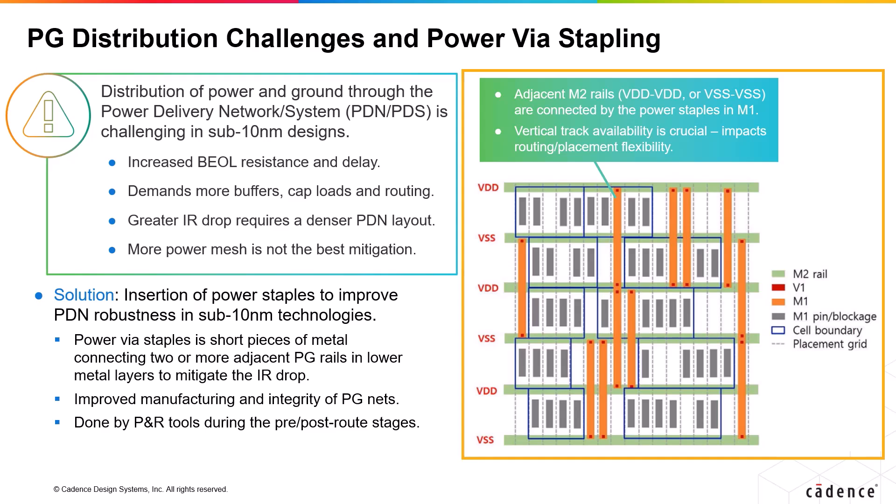VIA stapling is done by a place and route tool, like Innovus, during pre-route or post-route stages. VIA stapling may be required for specific technology nodes across foundries.